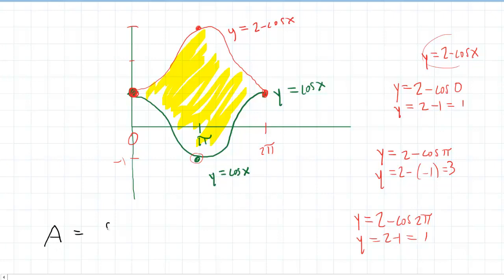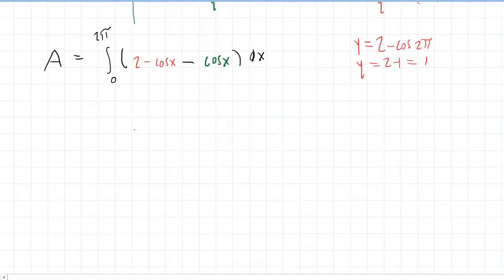So when we go to set up this integral, we're going to put in our lower bound first, which was 0, our upper bound, 2π. And then my top function is 2 minus cos x. And then we're going to subtract the bottom function, which is cos x. Now, that's our setup. The rest is calculus. We actually have to compute the integral. It's going to be helpful to combine those two like terms so that we have 2 minus 2 cos x dx.